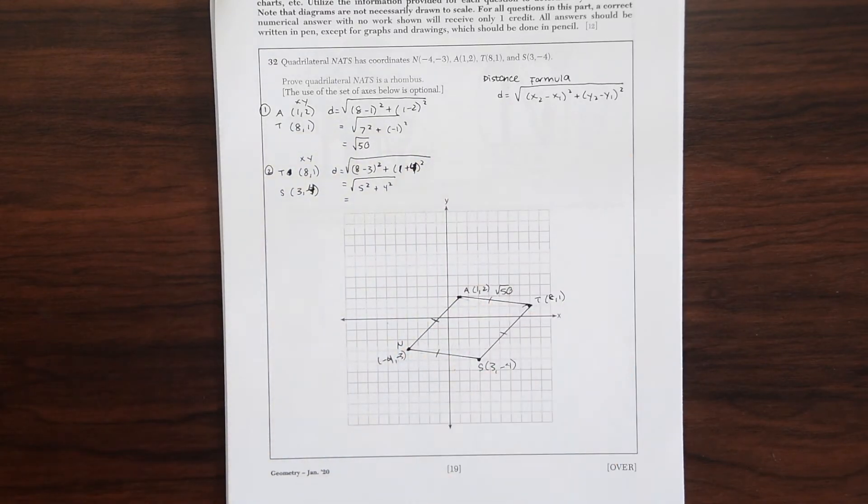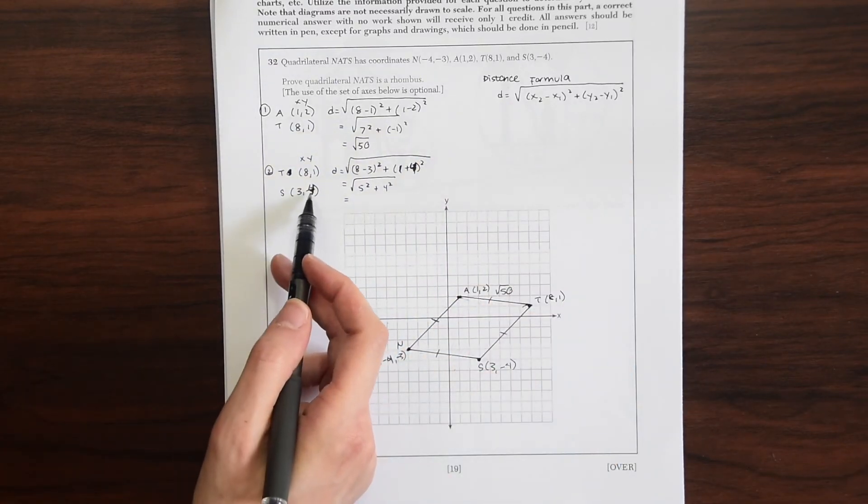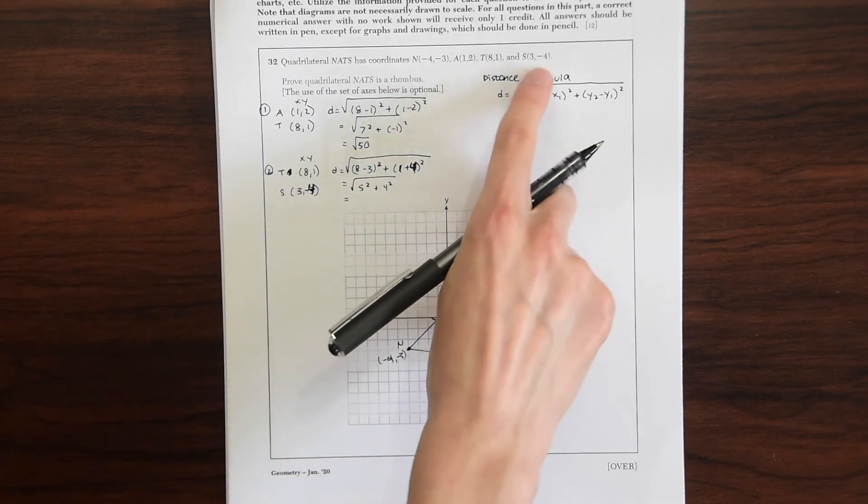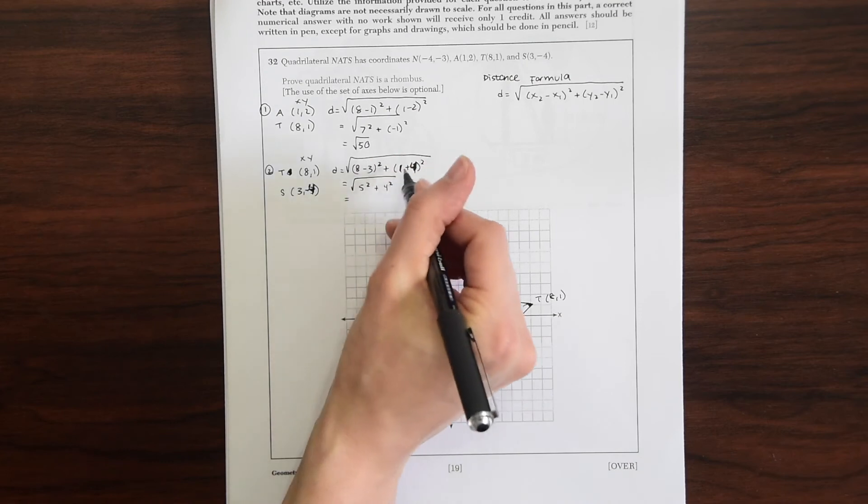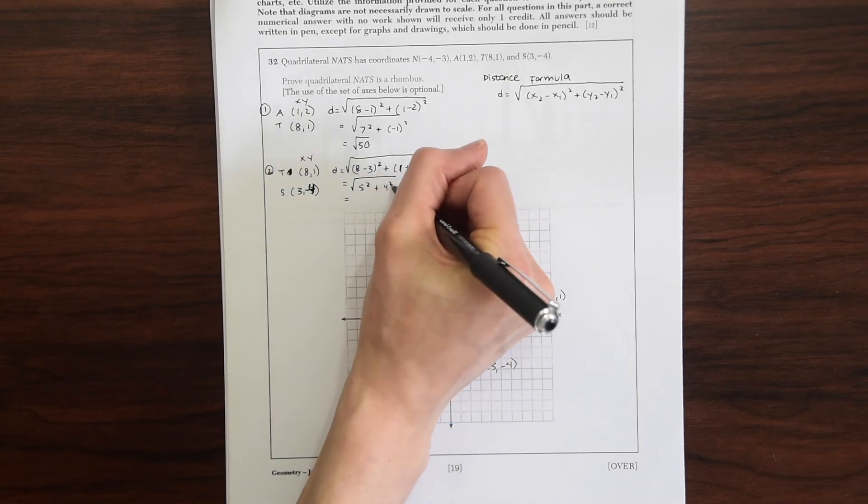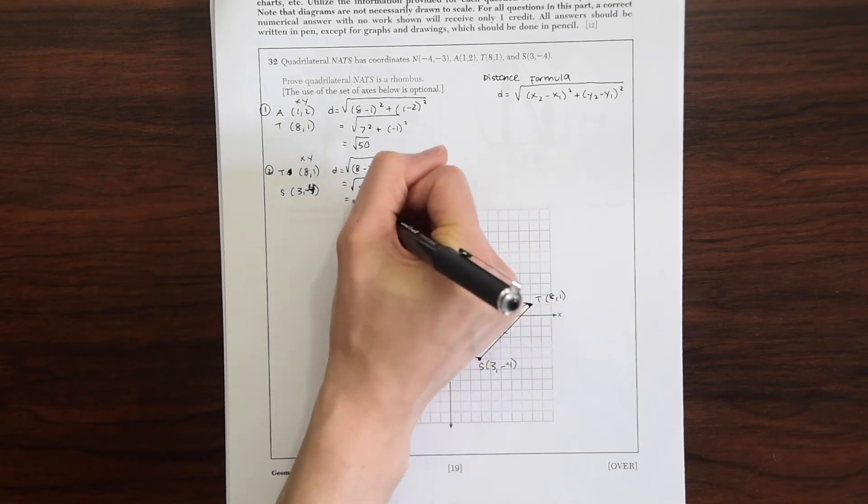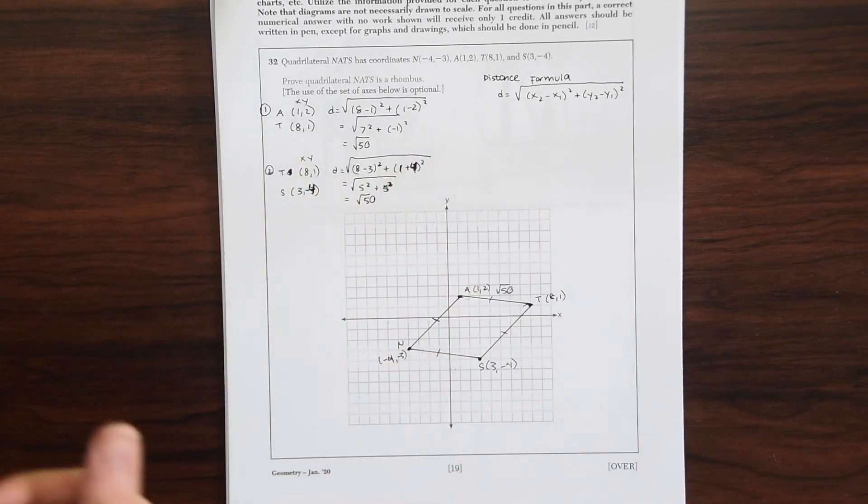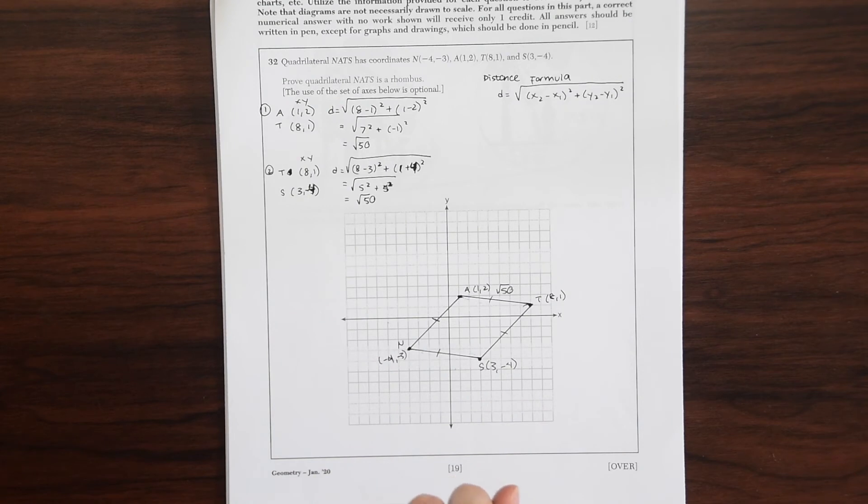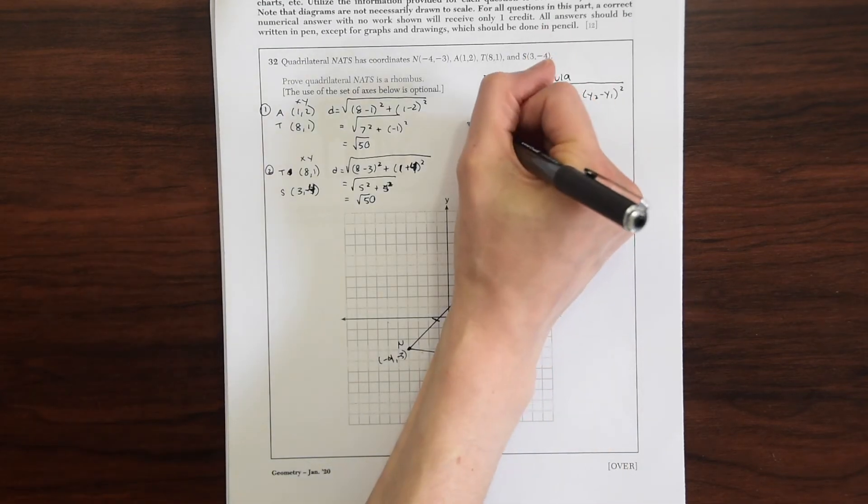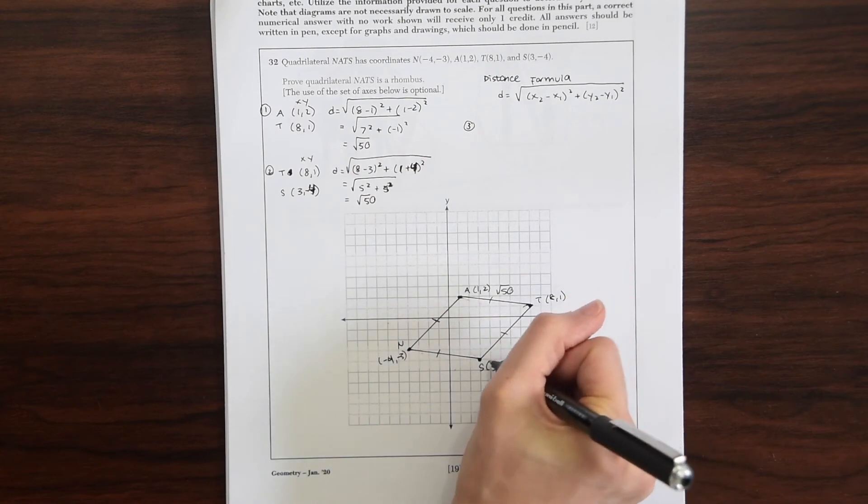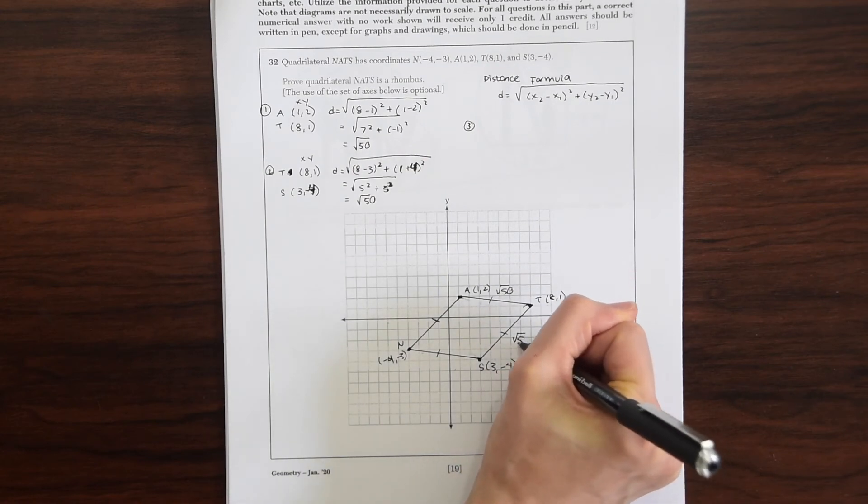Okay, so I messed up the coordinate point. So this is supposed to be S is (3,-4), right? So this is 1 + 4, which is going to give us 5², which is 25 + 25, which is √50. Yeah, so be careful. It's so easy to make minor mistakes like that. So always just keep checking your work as you go along. So we know that this side, TS, is also √50.